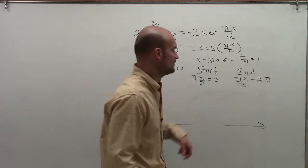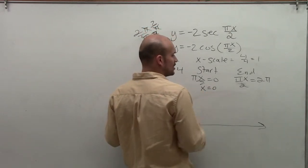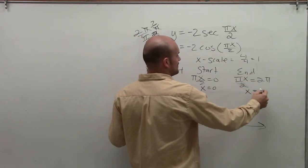Therefore, solving for each one of these, the start is going to still be at 0. And then 4 pi divided by pi, my end, is now going to be at 4.